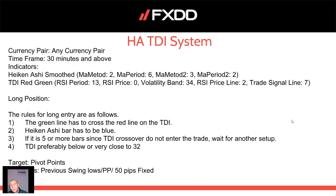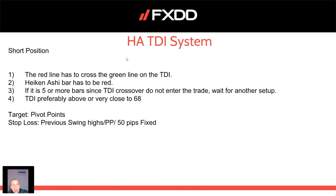The target is a pivot point or whatever you choose. If on a lower time frame the Heiken Ashi Smoothed color changes, you can exit the trade. Stop loss is the previous swing low, pivot point, or a fixed 50-pip stop loss if you trade on 30-minute or one-hour charts. For short positions: the red line has to cross the green line on the TDI indicator, the Heiken Ashi bar has to be red, and again within five bars from the TDI crossover. TDI should be close to or preferably above 68. Stop loss is the previous swing high, pivot point, or 50 pips fixed.